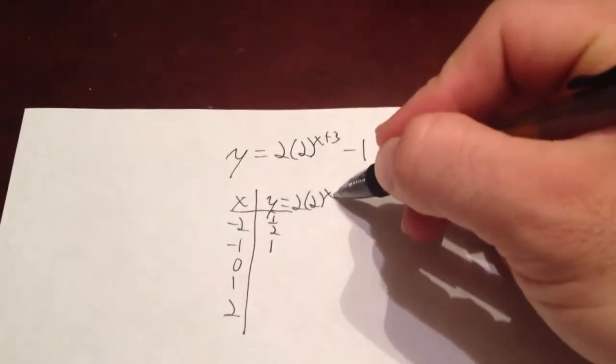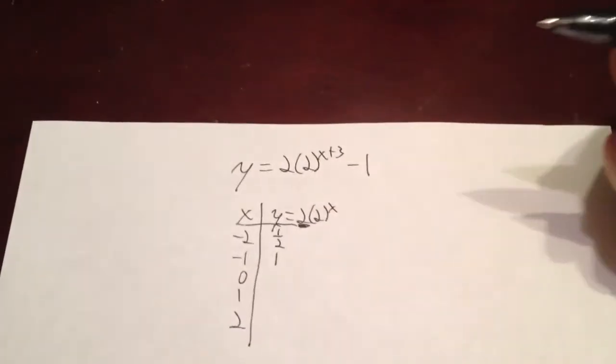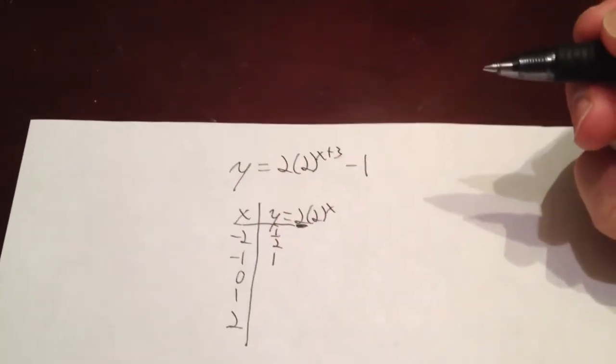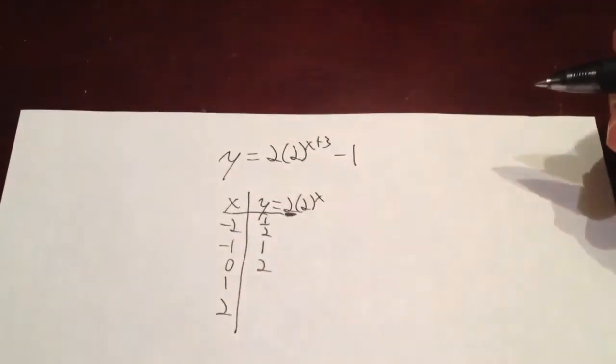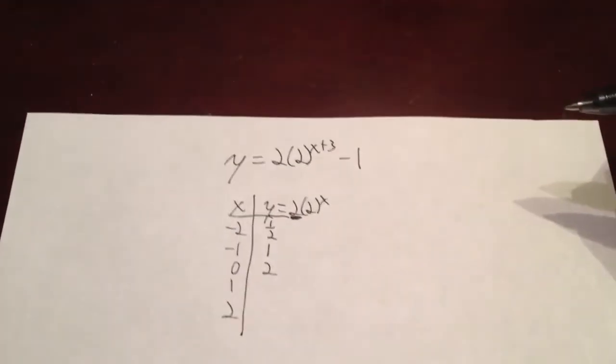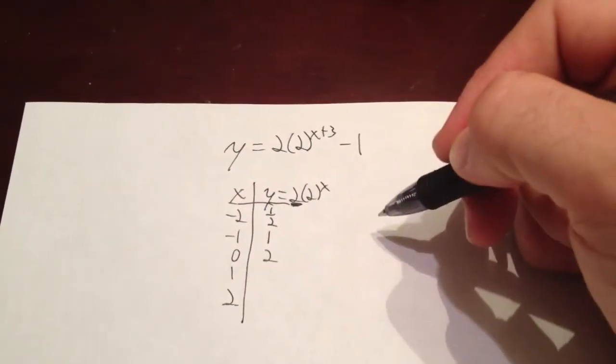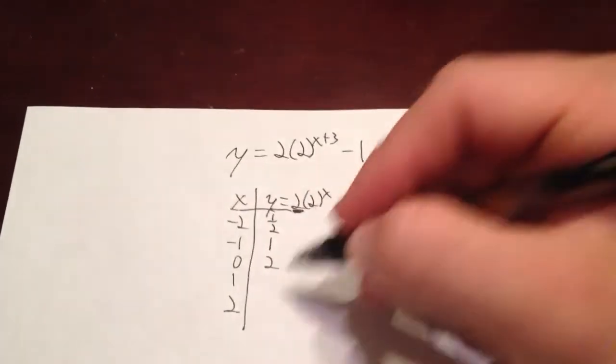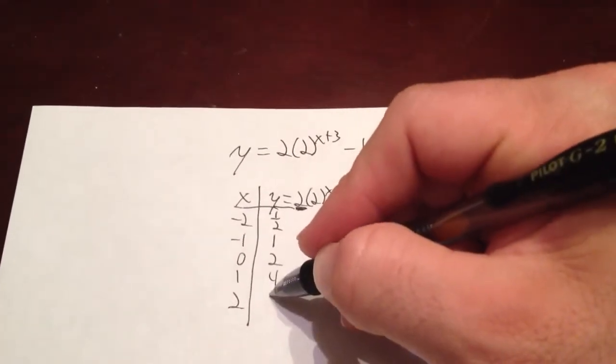We did talk about when you plug in 0 for x here, you're always going to get this beginning amount. Remember, like our bank accounts and things that we talked about, our principal value that we plug in. That's going to be the value that you always get for 0 there, because that's going to be our y-intercept of our original graph. Then, we're going to move it with the plus 3 and the minus 1. When I plug in 1 here, I'm going to end up with 4, and when I plug in 2, I'm going to end up with 8.